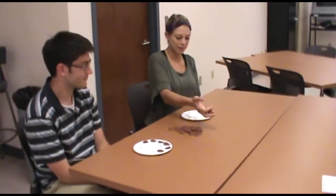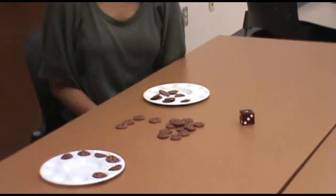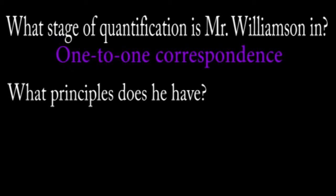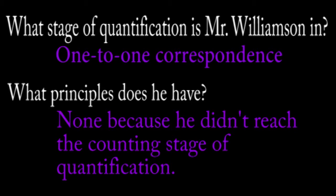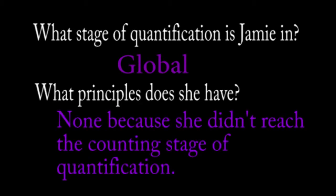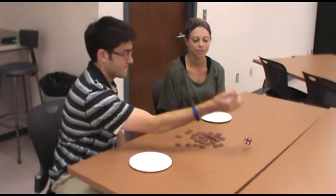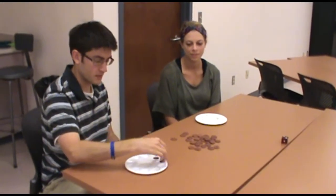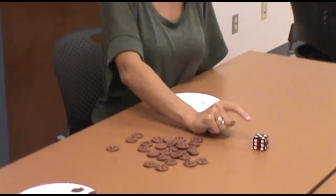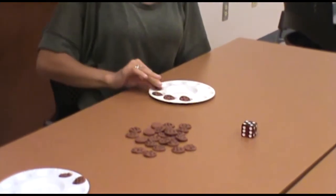Now you try. Okay, Jamie. Let's play a dice game. Two: one, two. Now you try. One, two, three, four, five. One, two, three, four, five.